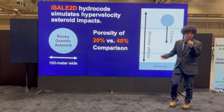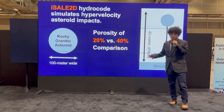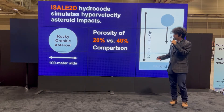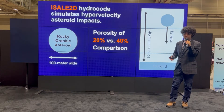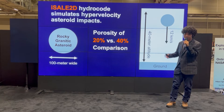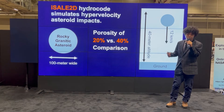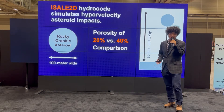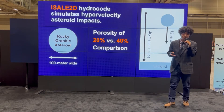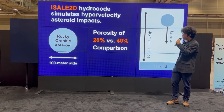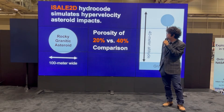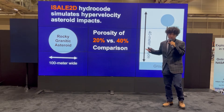It's kind of hard to visualize asteroids by photographs because they travel between 10 to 20 kilometers per second, so you wouldn't be able to take photos of them. And if you see them coming, you should run away, not take photos. So instead, what I did was use something called hydrocode.